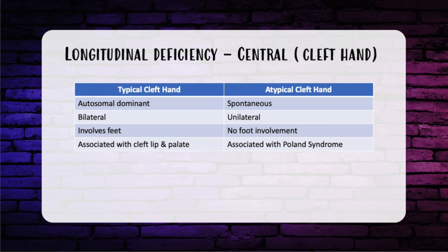The indication for treatment is to restore hand function, such as when they lack thumb opposition. With typical cleft hand, it's autosomal dominant with limb involvement, especially the feet. It's bilateral, familial, syndactyly is common especially in the first web space, there's a V-shaped cleft, and it's associated with cleft lip and palate. Atypical cleft hand is spontaneous, usually unilateral, with sporadic limb involvement not including the feet, and is associated with Poland syndrome.